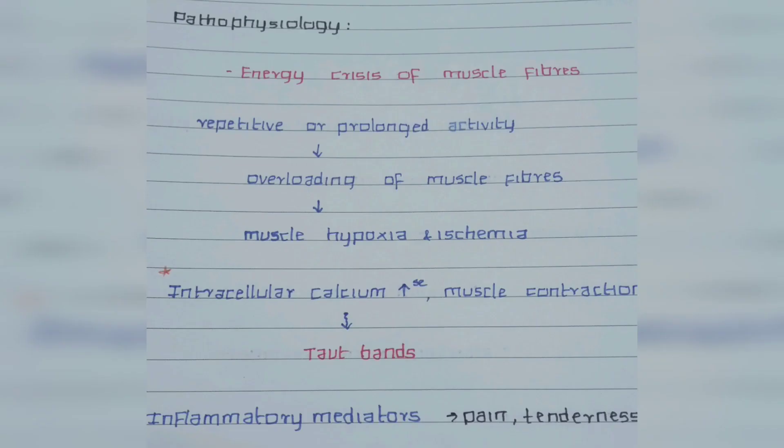Pathophysiology: due to repetitive or prolonged activity of the muscle, there will be overloading of the muscle fibers, which is caused by excess calcium release from the sarcoplasmic reticulum and depletion of ATP molecules. This causes a decrease in the pH level of the muscles, leading to muscle hypoxia and ischemia. This causes the formation of taut bands, and because of these taut bands, inflammatory mediators are released, causing pain and tenderness.